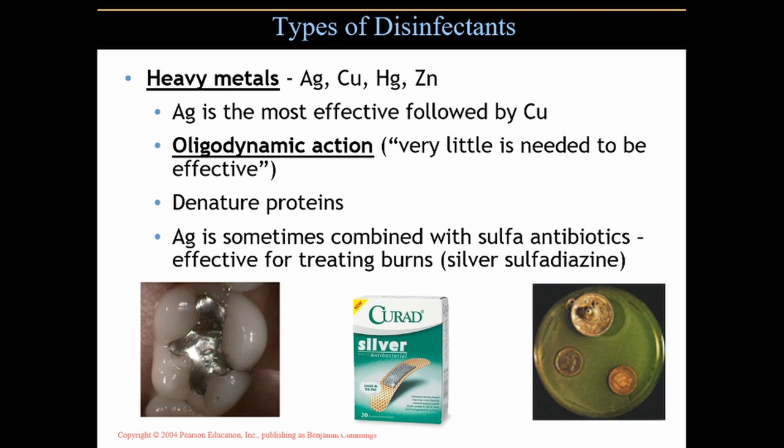Silver is sometimes combined with sulfa antibiotics, which is very effective for treating burns — called silver sulfadiazine. We also use metals in tooth fillings, mercury being one of them. You can buy band-aids with silver infused into the pads. There's a picture here showing coins on a lawn of bacteria on a petri plate, and the coins will inhibit their growth somewhat.